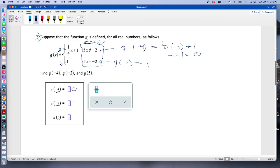Finally we do g of five, and again when x is five, it's not equal to negative two, so we're back up here for the third one. So we're going to go g of five equals one-fourth x plus one, so we put in the five.